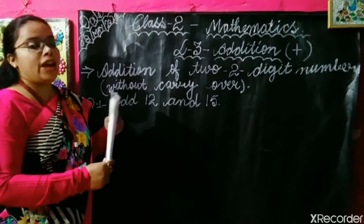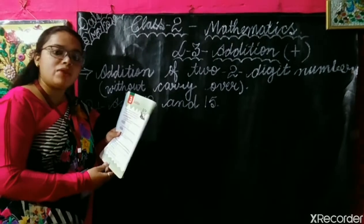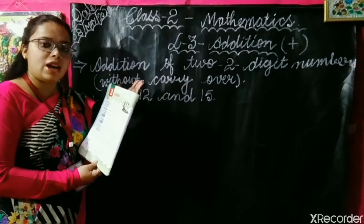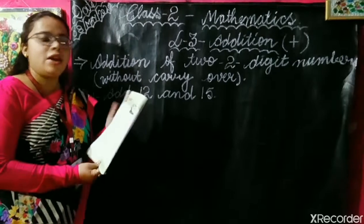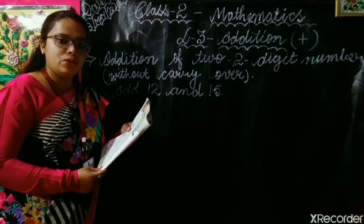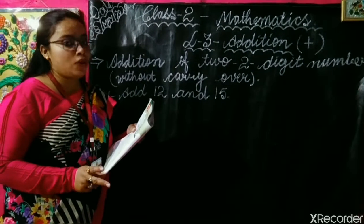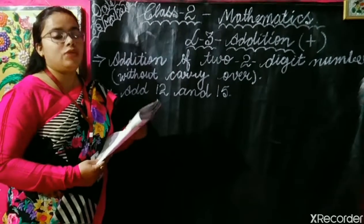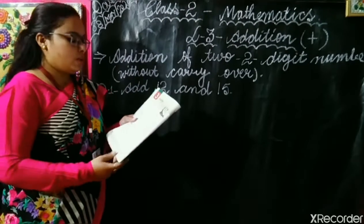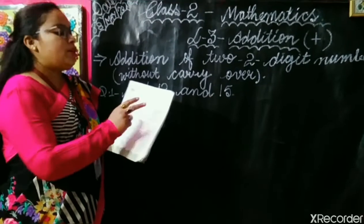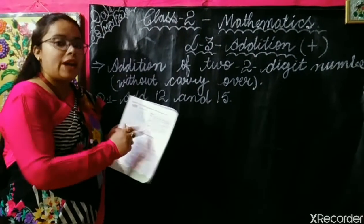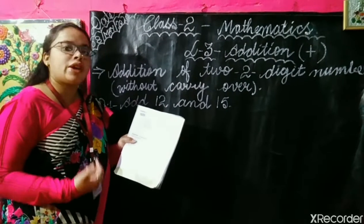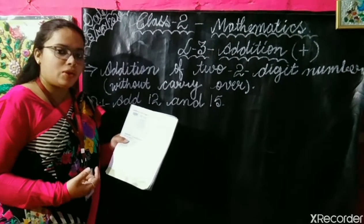Children, you had already studied in your previous class about addition. You had studied one digit addition. But here, I will be teaching you two digit addition, but without carry over. First of all, we will be starting with very simple addition. I am going to tell you one method given in your book, and after that I will be teaching you some other methods so that you can learn very easily.